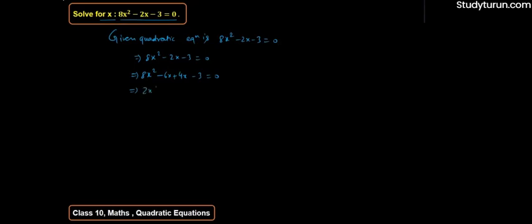Ab 2x common lete hain, jo equal hoga 4x minus 3, plus 1 common lete hain, jo equal hoga 4x minus 3, equals to 0. Jo equal hoga 2x plus 1 into 4x minus 3 equals to 0.